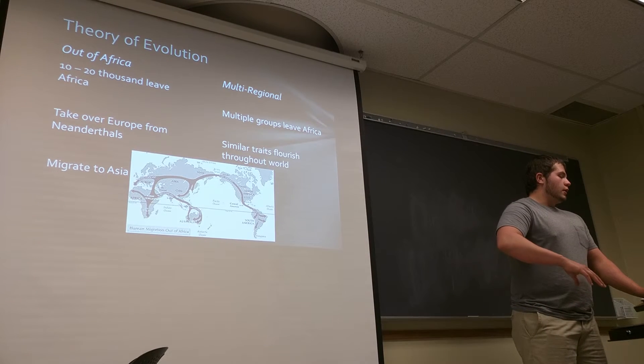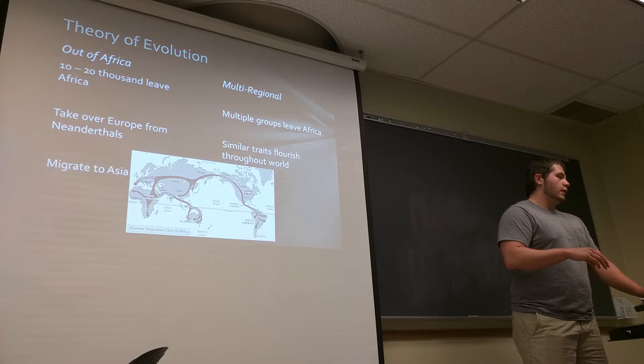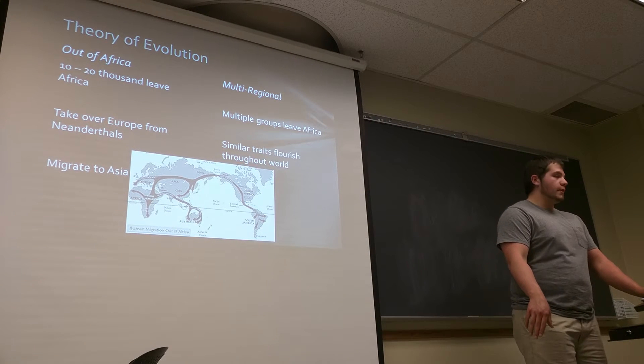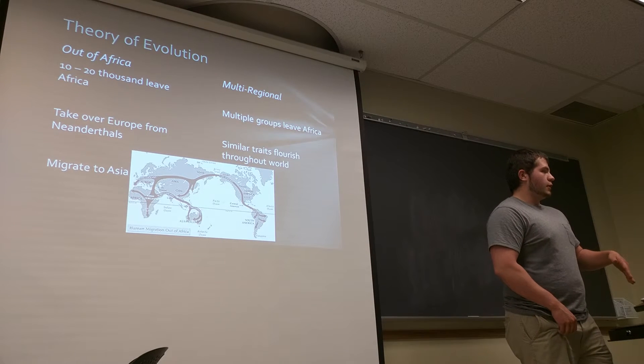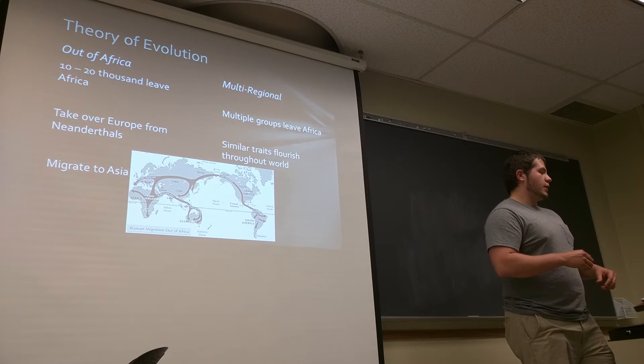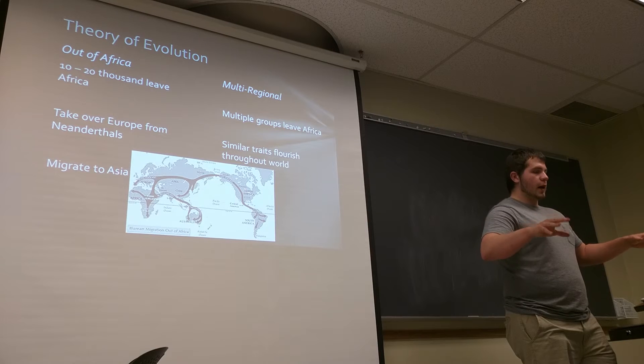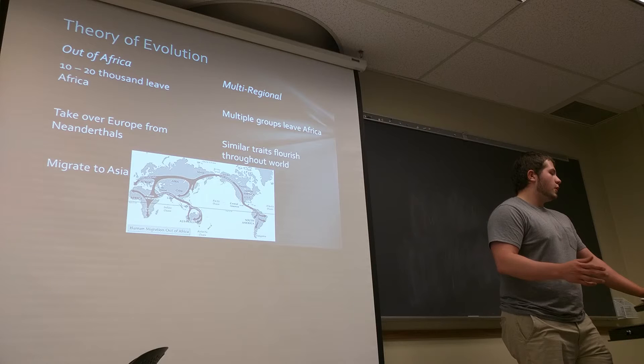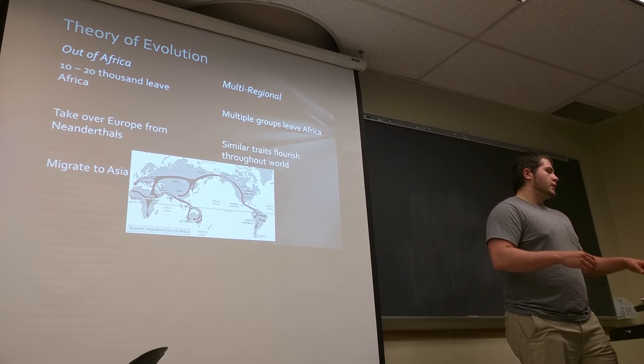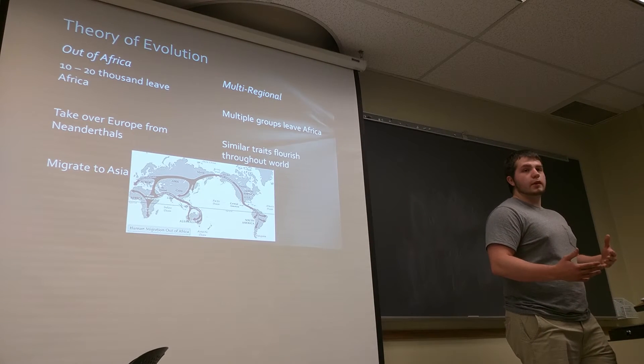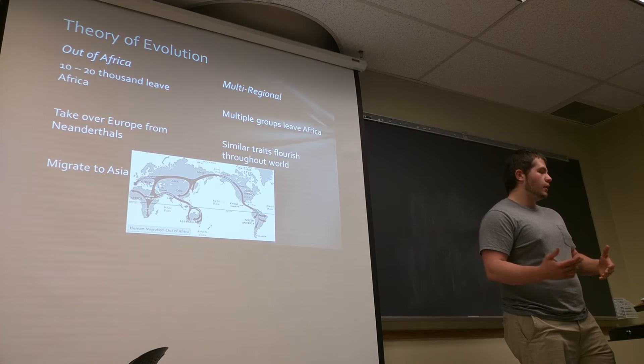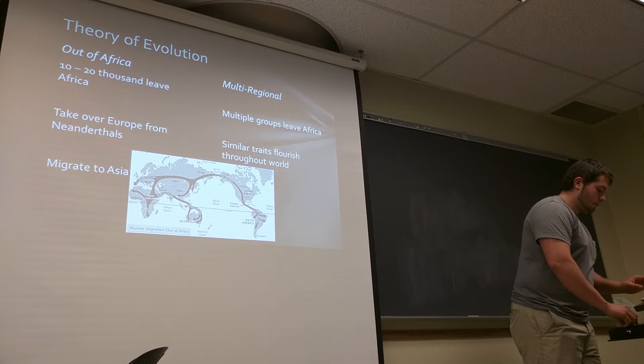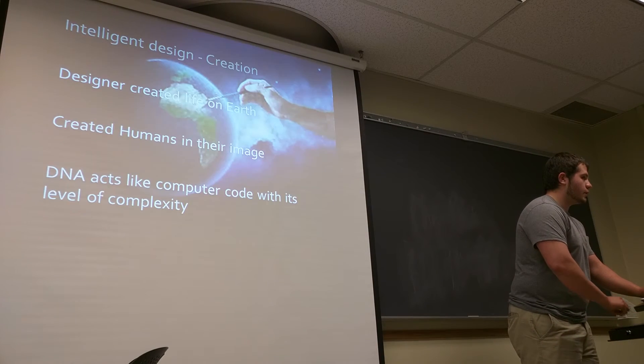Went through Asia, down all the way through China and into Australia. Then they eventually went up through Siberia and came into the Americas. The other theory is called the Multi-Regional Theory. Basically, what it says is that instead of one group leaving Africa, there's actually multiple groups that left Africa all at the same time. They populated the Earth and similar traits just flourished throughout the world and kind of all assimilated into one species that we know today. So they're pretty similar theories, both say life started in Africa and that eventually came to be as we are today.